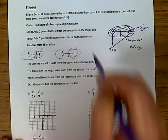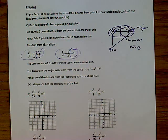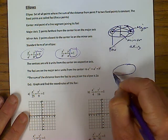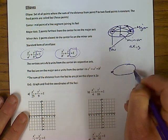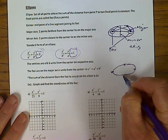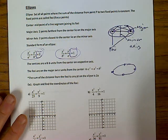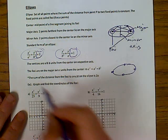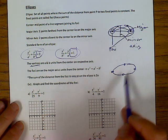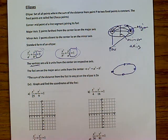One of the big keys is the equations will always equal one. Now when you draw an ellipse, these points here and here are going to be your vertices — they'll talk about the vertices.